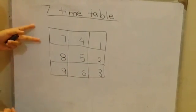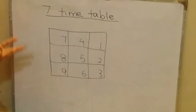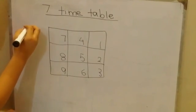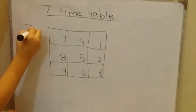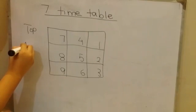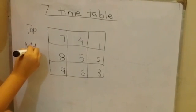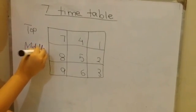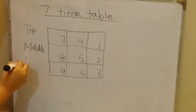And now we have separated the grid into 3 rows. This one is the top row, this is the middle row, and this one is the bottom row.